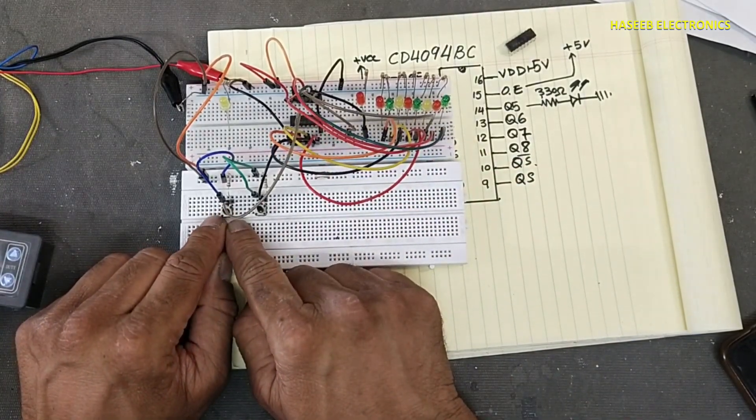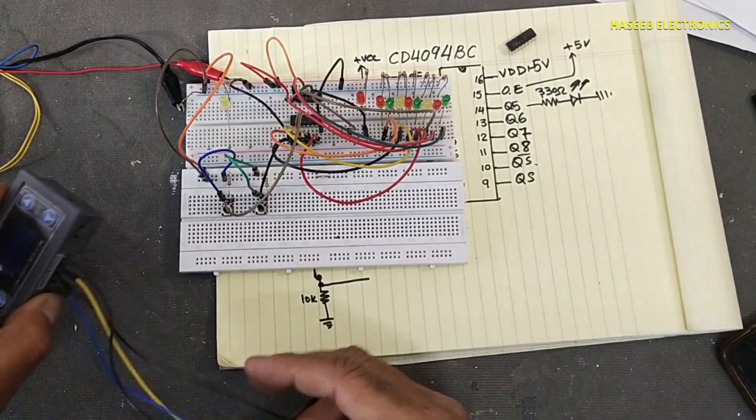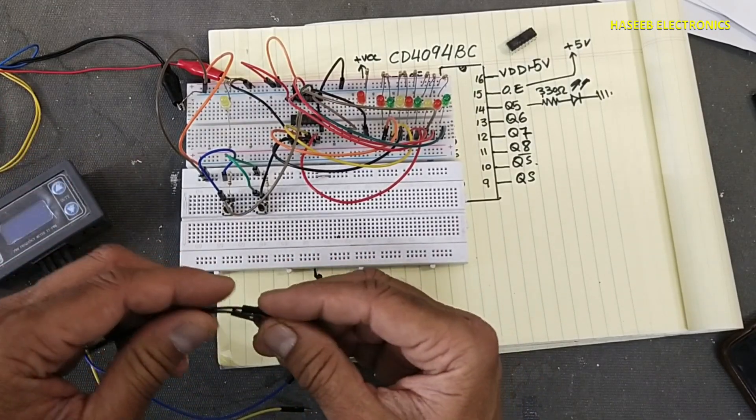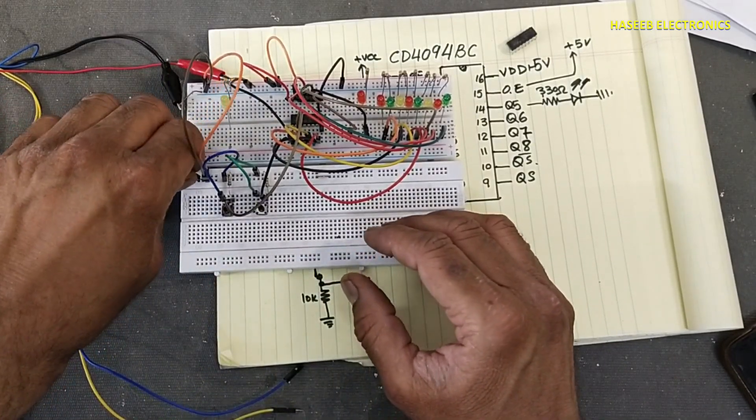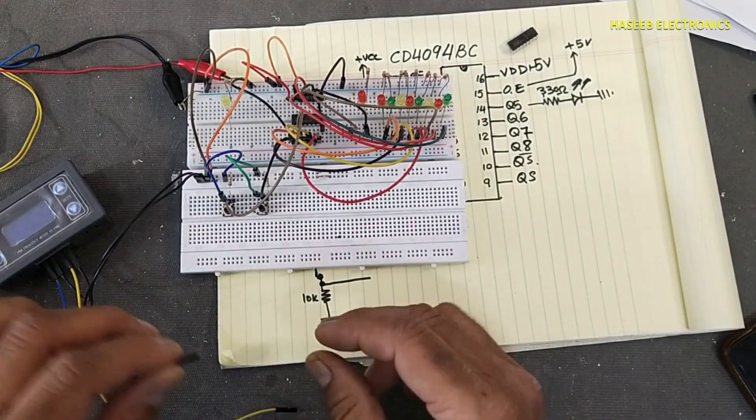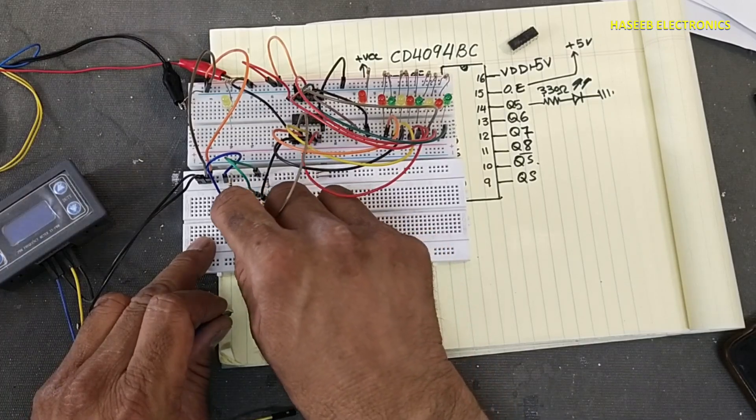I am using this micro switch. It has bounce time. To overcome this bounce time issue, I will use this PWM module. We will provide clock signal from here. So this is clock pulse. We will bring it here.